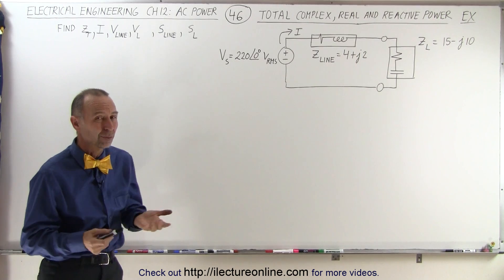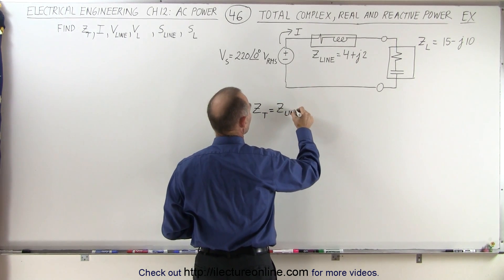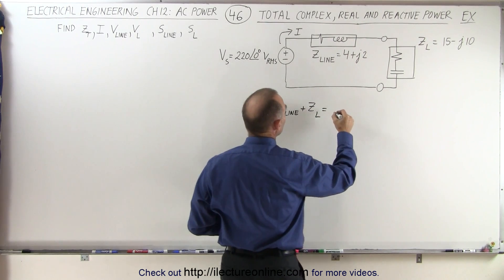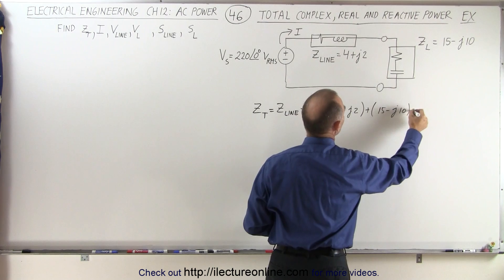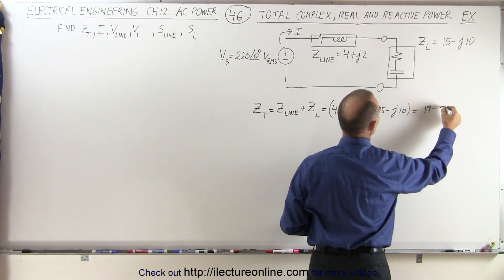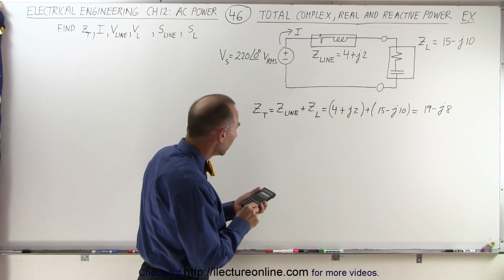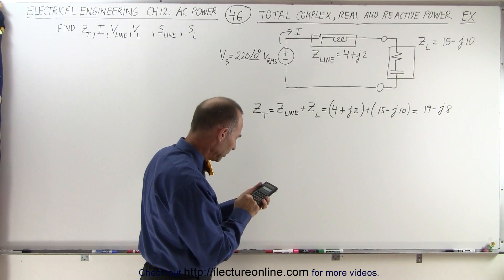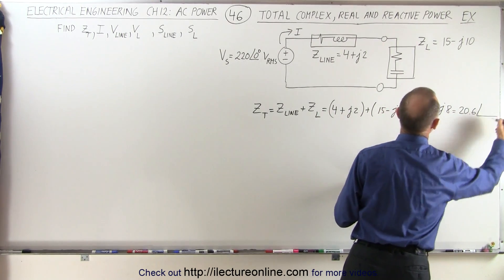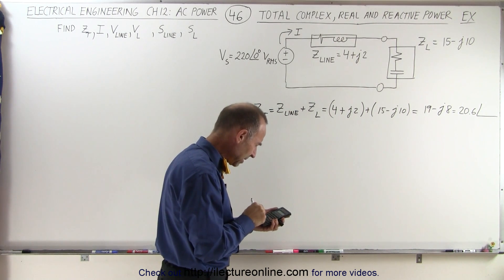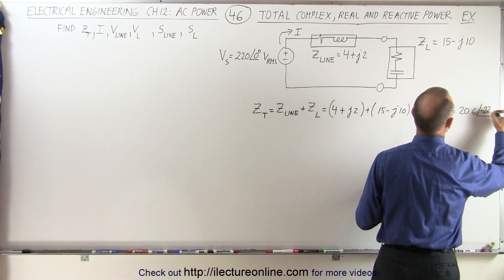Getting the total impedance is simply the sum of the two because they are in series. Z total equals Z of the line plus Z of the load, so it would be 4 plus J2 added to 15 minus J10, which equals 19 minus J8. In magnitude and phase angle format, that gives us the square root of 19 squared plus 8 squared, which is 20.6, with a phase angle of negative 22.8 degrees.